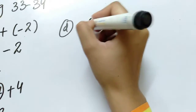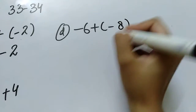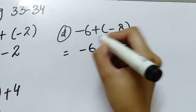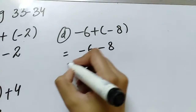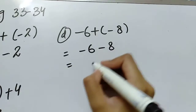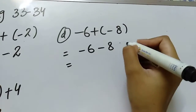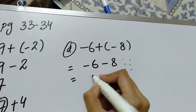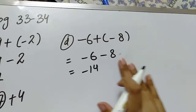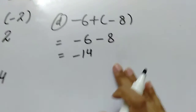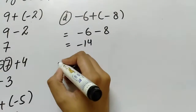Now D part: minus 6 plus minus 8. Plus minus is minus, so minus 6 minus 8. That gives 14, and with the bigger sign being negative it will be negative 14.